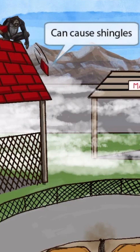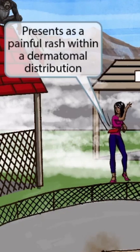This is the reactivated form of the infection. After the virus becomes latent in the trigeminal or dorsal root ganglia, it becomes reactivated during times of stress or immunosuppression, resulting in a dermatological condition known as shingles. Notice that the monkey has become quite aggressive and even threw a shingle at this poor woman. You can see that one of the shingles has made a clean cut right on her abdomen. This is here to help you remember that shingles presents as a painful rash within a dermatomal distribution.